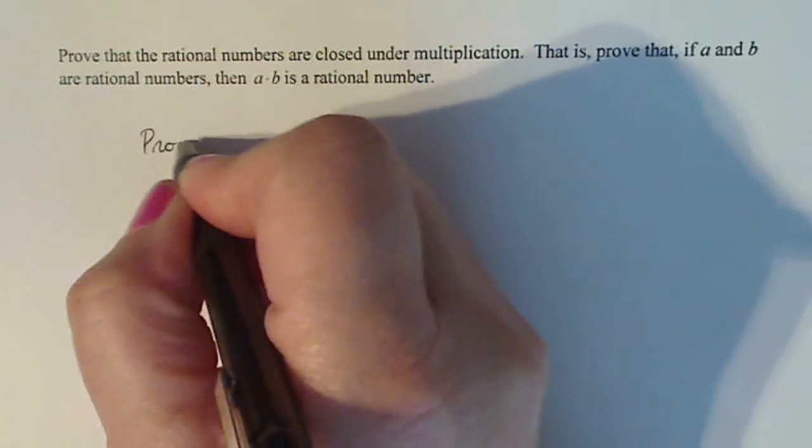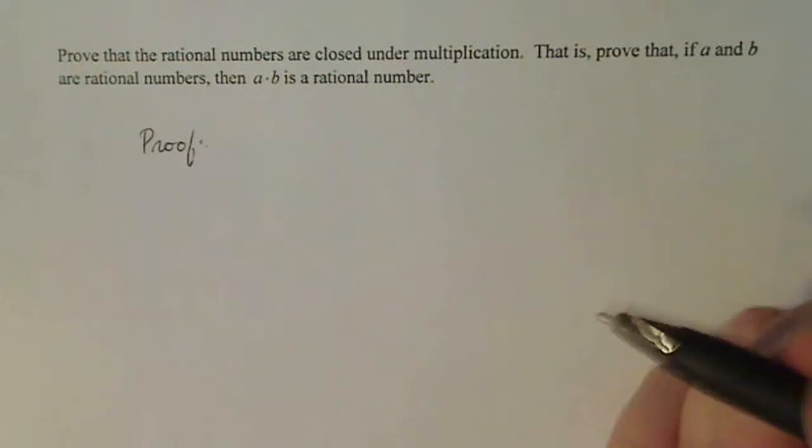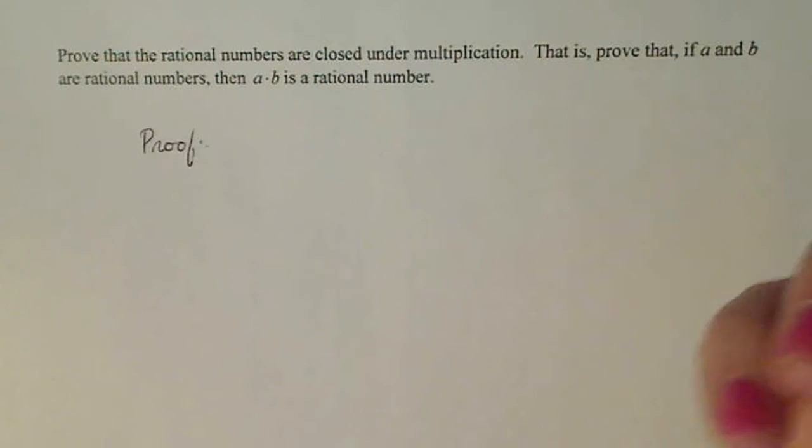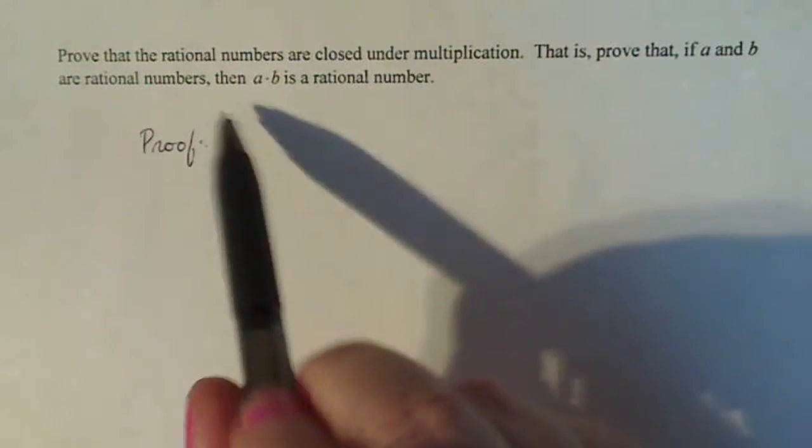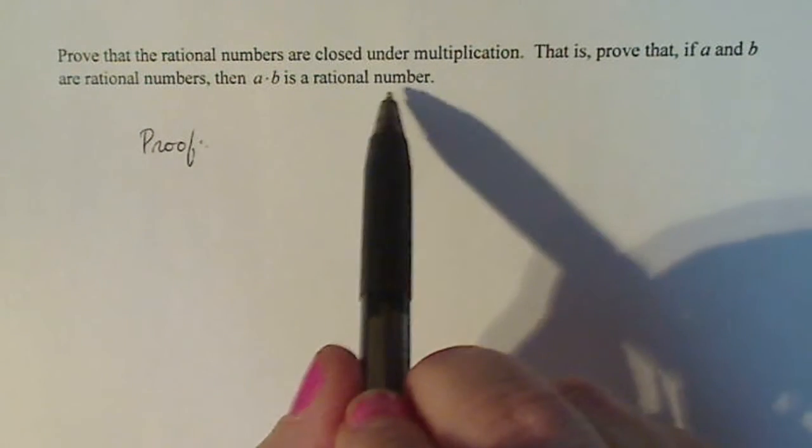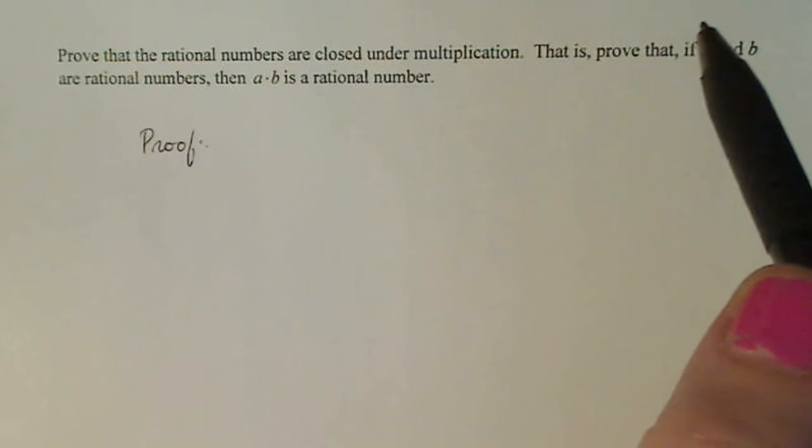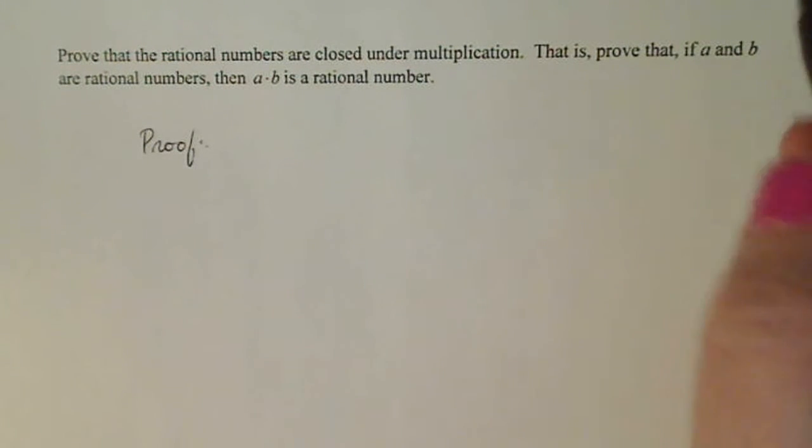In order to do a proof, I'm going to start with the word proof to show that I'm actually starting the proof. And I'm going to do this as a direct proof because these are rational numbers that have a clear definition and it's easy to do a direct proof.